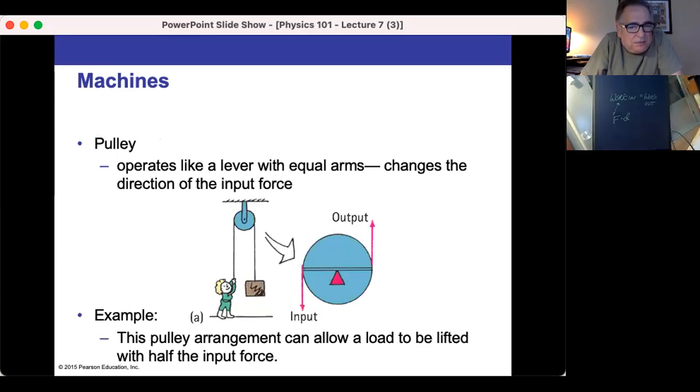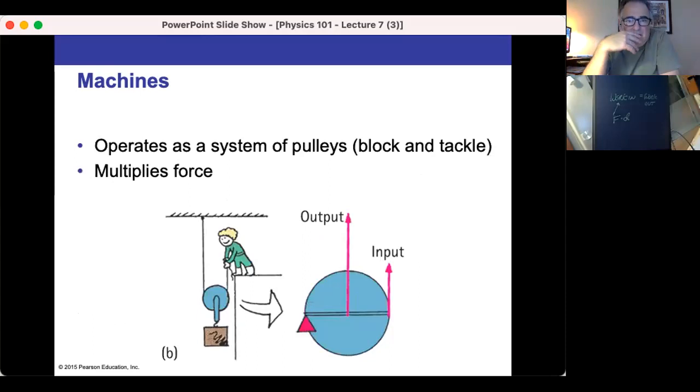Pulleys are another example. Because it's like a lever arm, it changes the direction of the input force. It can allow a load to be lifted with half the force. I'm just pulling twice the distance. Or more, if it's a larger pulley. In a sense, it's multiplying the force, because I'm using a larger amount of distance, pulling a larger amount of distance.